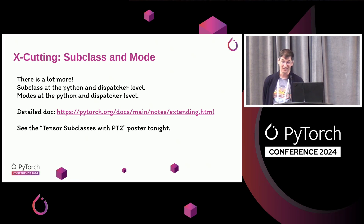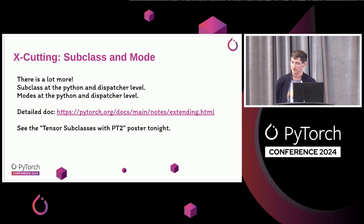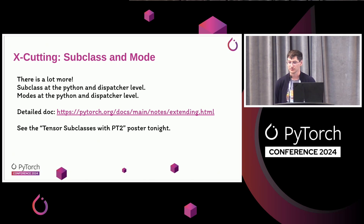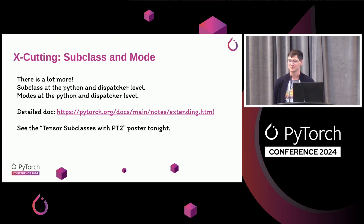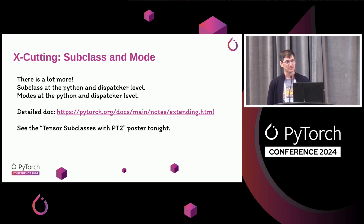There is a lot more to do with subclass and modes. We have __torch_function__ at the Python level and subclass at the dispatcher level, allowing very different things. We also have modes at both of these levels. There are detailed docs at the linked address, and you can come see us at the Tensor subclass with PT2 poster that Brian is running after this if you have questions about how to use this system.